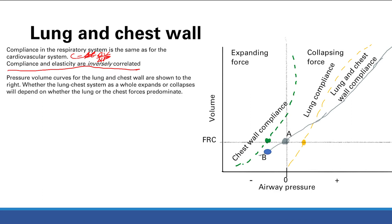When we look at these pressure-volume curves — volume versus pressure — this basically shows you whether the lung-chest system as a whole will want to expand or collapse, based on the forces of the lung and the chest in combination. The slopes of these curves represent compliance, since compliance equals volume over pressure.